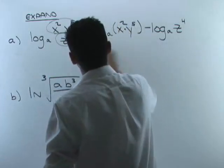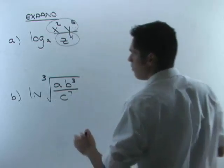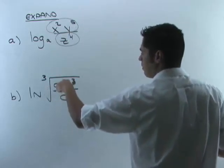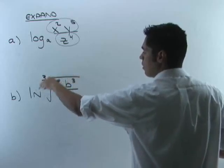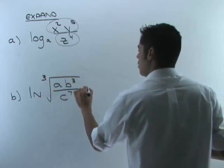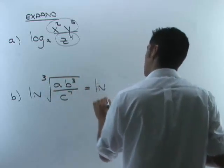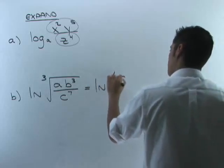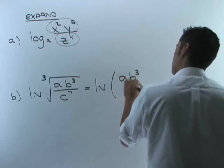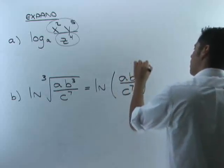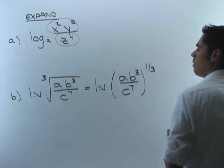Okay, what we want to realize first before anything is that all of this, even though it's a fraction, is sitting underneath of a cube root, the entire thing. So what we need to do first is rewrite the root as a power. So remember, cube root is the same as raising something to the one-third.